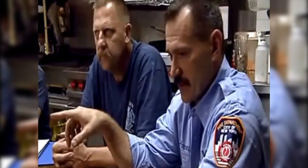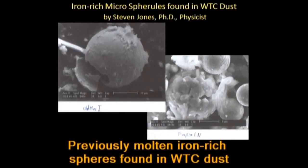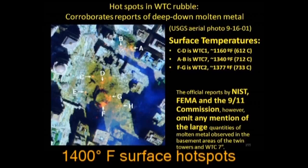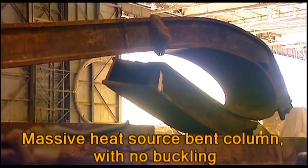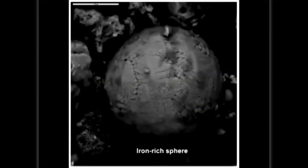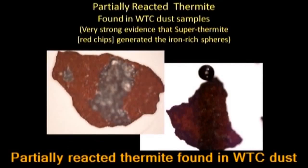Eyewitnesses reported molten steel running down the channel rails. Molten metal was seen coming out of the northeast corner near the 80th floor, pouring from the tower with a shower of sparks, looking like steel in a foundry. Later, very small spheres of iron were found all through the dust — that iron must have been molten, allowing surface tension to pull it into those spheres. NASA photos indicated very high temperatures days after the event, and fire science professors were perplexed by the melting of steel beams. Independent scientists suggested thermitic material must have been used, and a peer-reviewed report then found explosive red-gray chips throughout the dust, positively identified as nanothermite or superthermite.